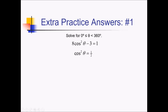And then to get cosine by itself instead of cosine squared, in this situation I can square root both sides of the equation. So that's going to give me both a positive and a negative root. The square root of 1 half — that's radical 1 over radical 2, which if I simplify the radical is radical 2 over 2. So we can say cosine equals positive root 2 over 2, and cosine of theta also could equal negative root 2 over 2. So these are two branches that we're going to have to solve independently of each other.